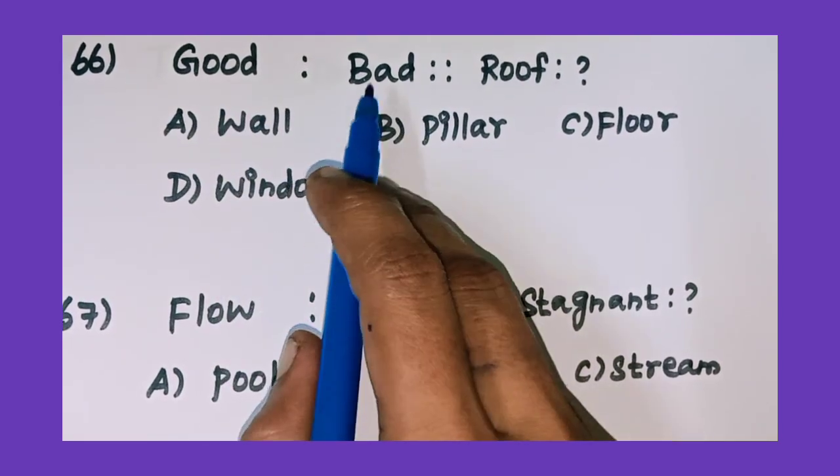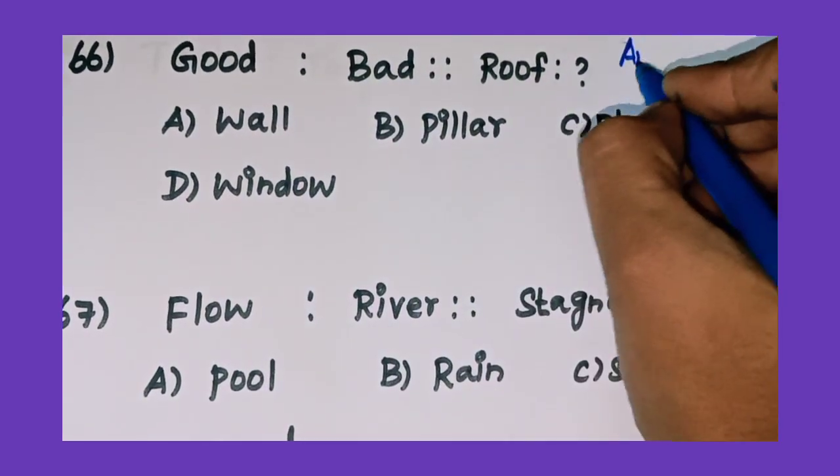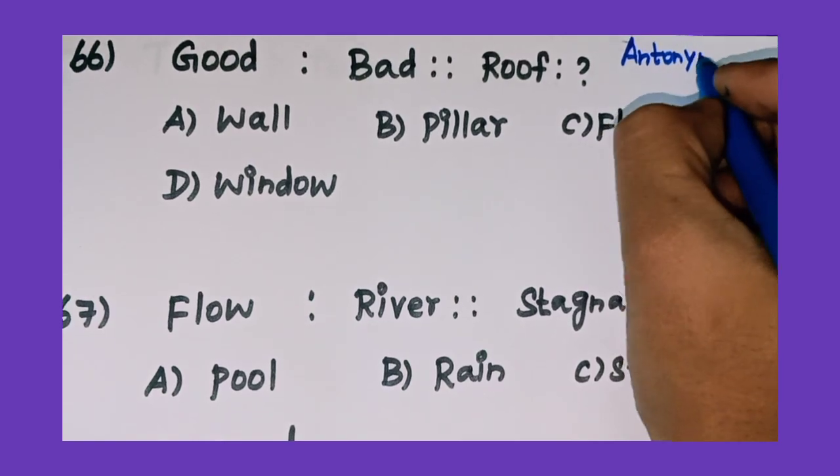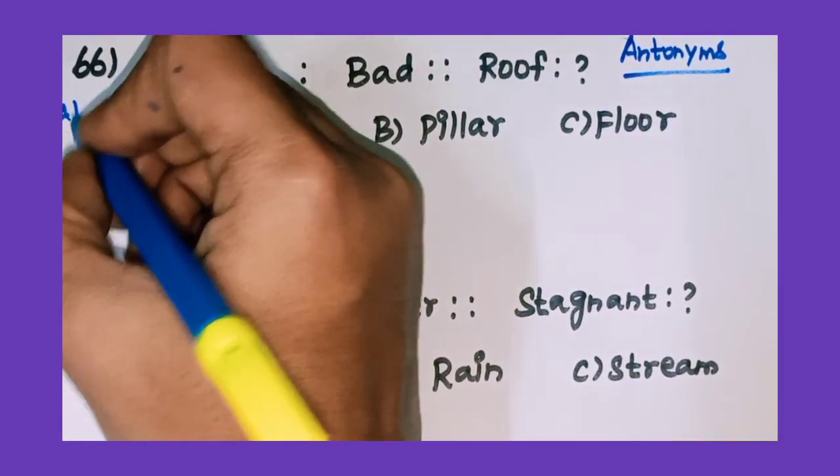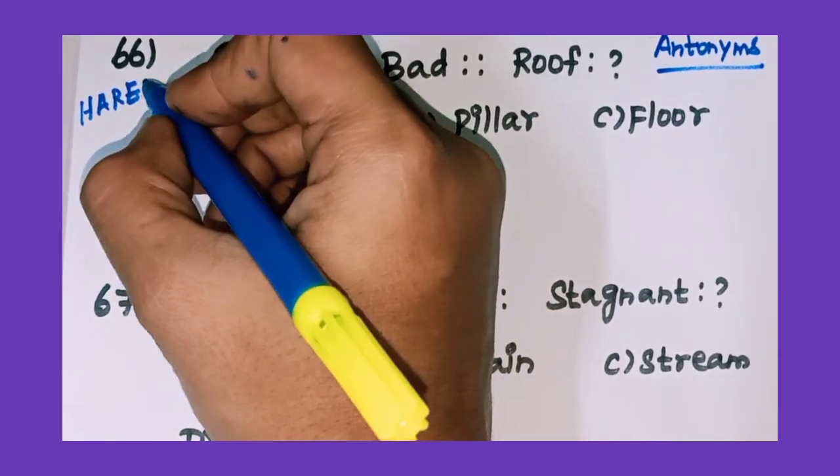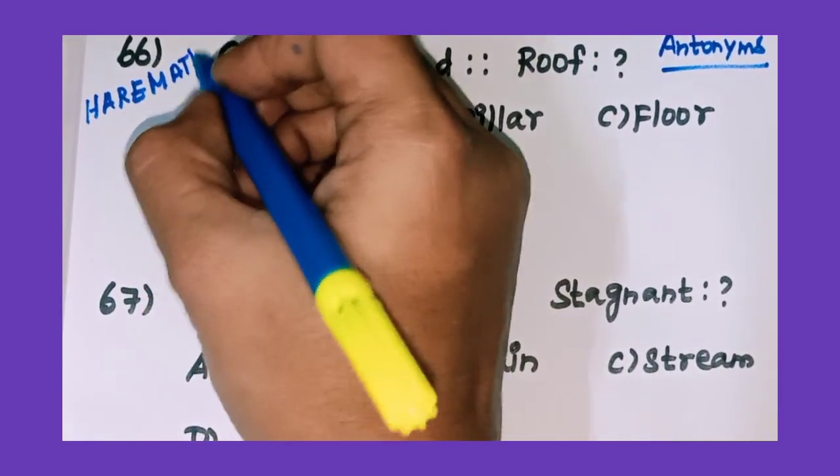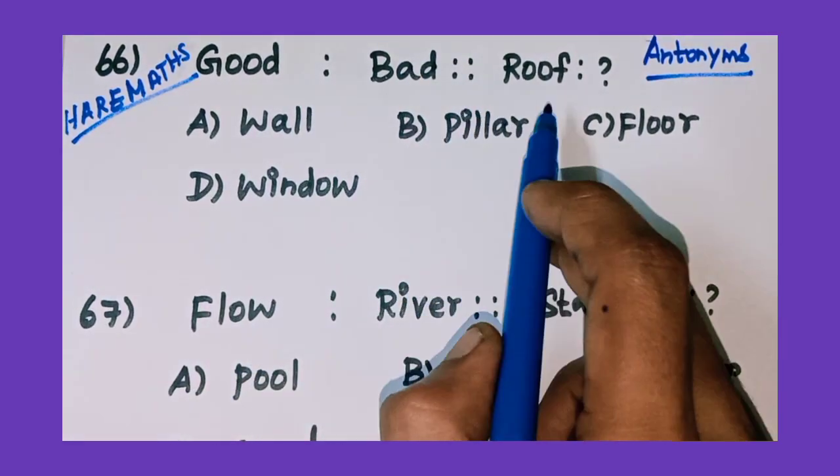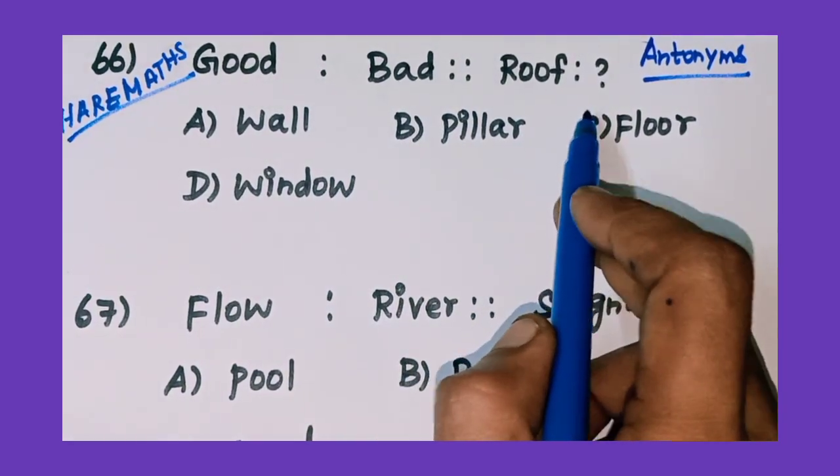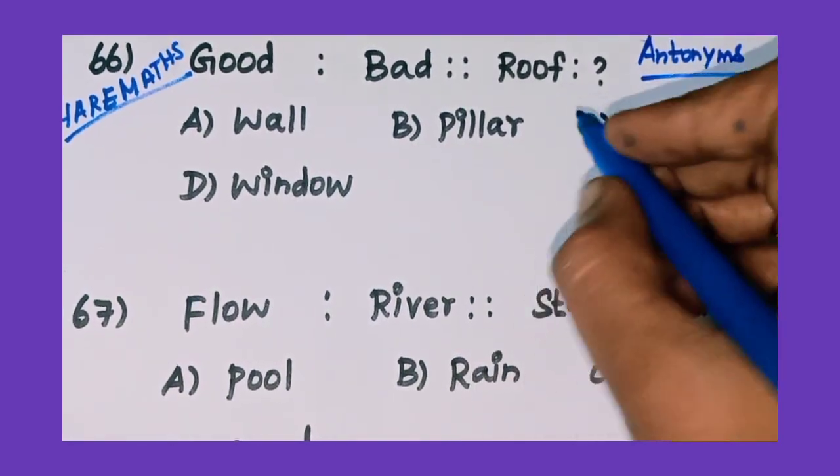This is an antonyms concept. Good is opposite to bad, and roof is opposite to option C: floor.